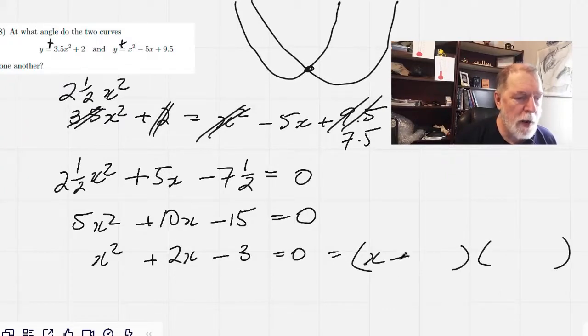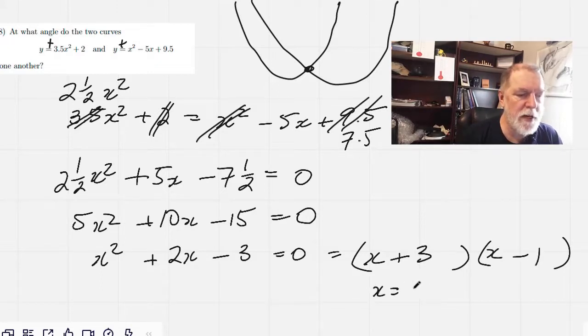x squared plus 2x minus 3 equals zero. This isn't as mean as it started out looking. So now we can factor that easily enough. x plus 3 times x minus 1. So we've got an x equals negative 3 and an x equals 1.